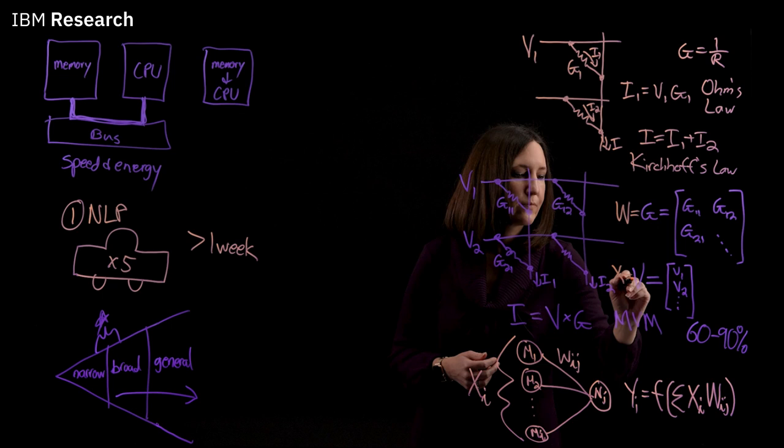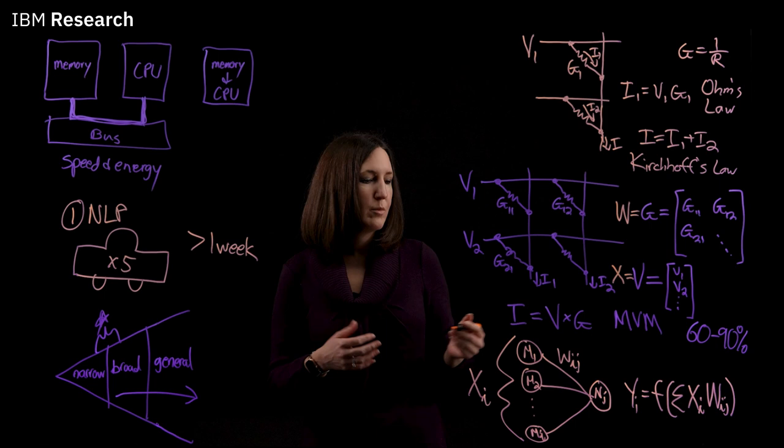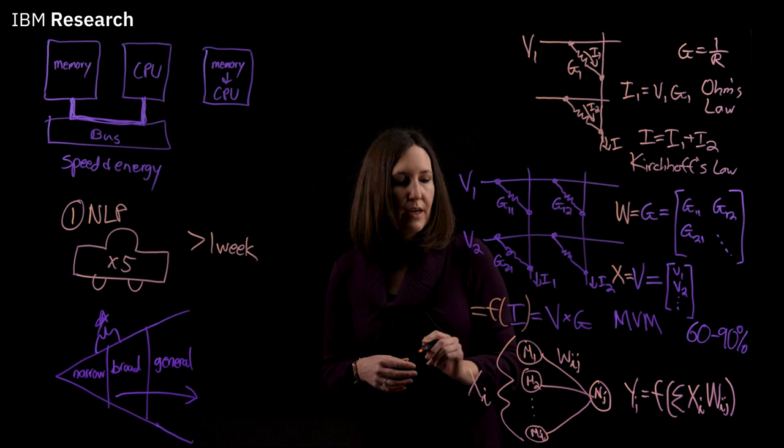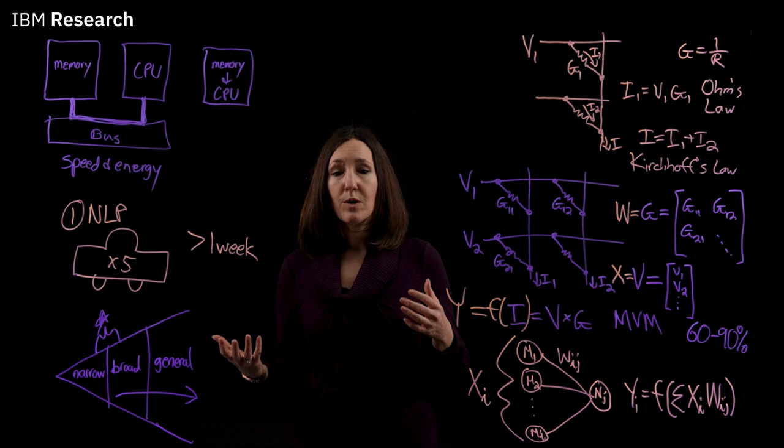And then we can encode the inputs to our neural network layer X as a vector of input voltages V. And finally, we can collect the currents coming out of the columns of each column of the array and apply our activation function F to our current. And that is going to give us the output from our neural network layer Y. And this way, we can use these concepts to map our neural network onto our memory array to perform analog in-memory computing for more energy efficient AI.